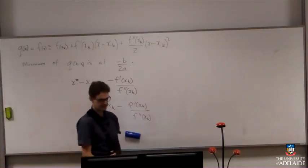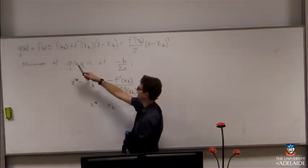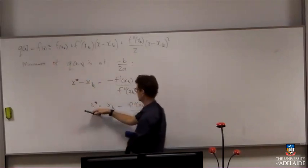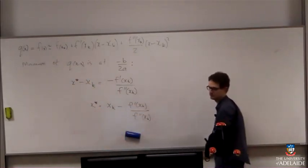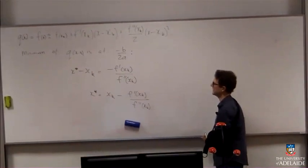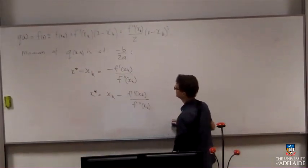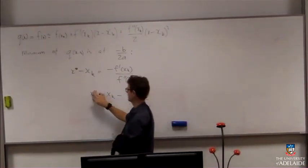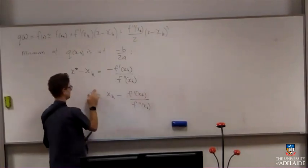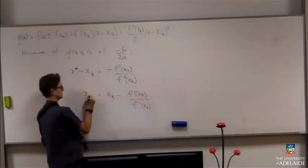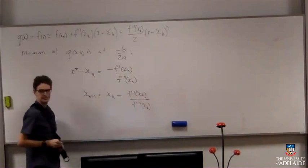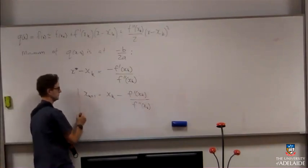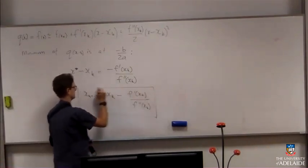And now, if my original function f was a quadratic, then that would just be the minimizer, right? That would be the minimizer of my function f. But for a general f, that's not going to be exactly at the minimum. So, instead, I'll call this a new guess at the minimum.